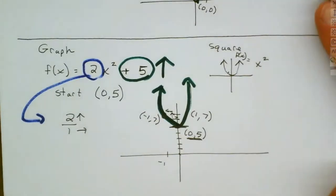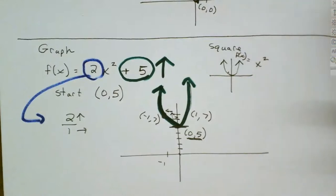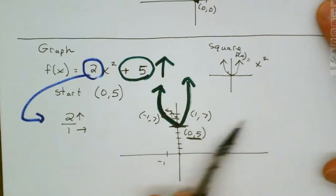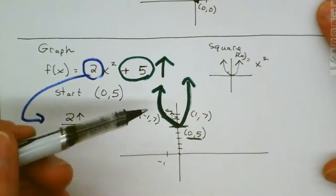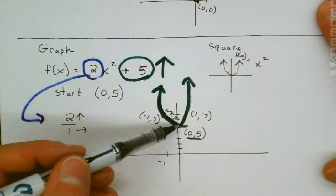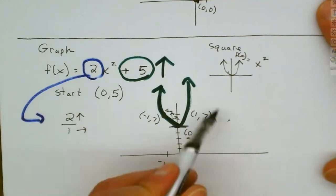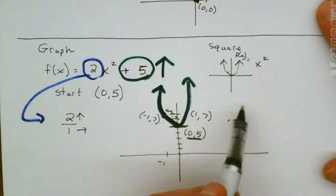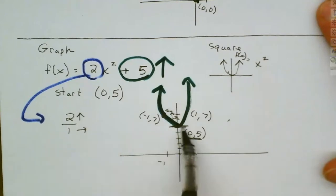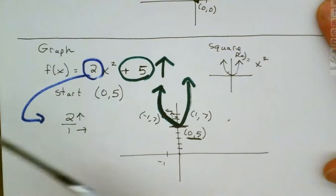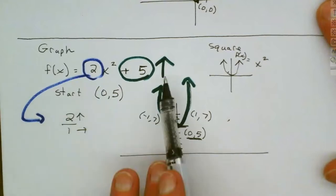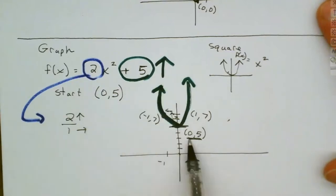This example only moves the graph up — we haven't moved it left or right. We always go back to where we start from. If it would have been moved over, we would have started there, moved it up, and made a U from there. In this case, we didn't move it left or right; we only moved it up 5, so we start at 0,5.